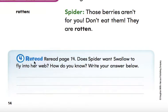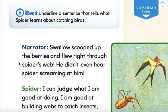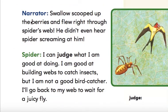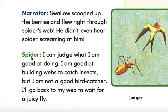Once again, be sure to answer this question. Swallow scooped up the berries and flew right through Spider's web. He didn't even hear Spider screaming at him. Spider: I can judge what I am good at doing. I am good at building webs to catch insects, but I am not a good bird catcher. I'll go back to my web and wait for a juicy fly.